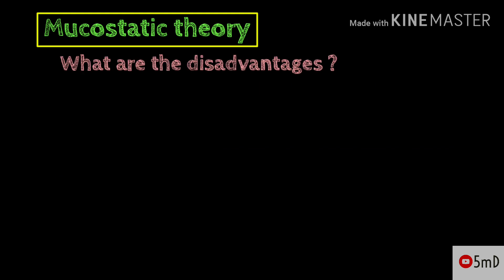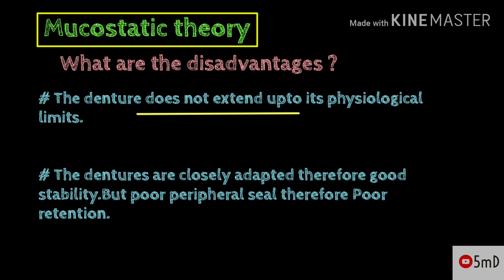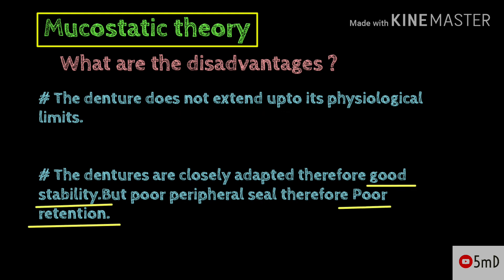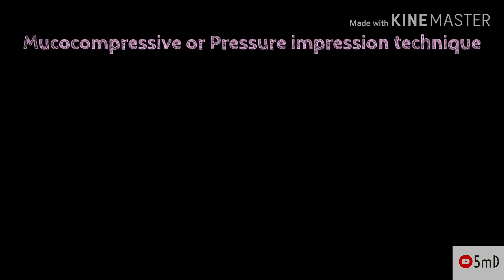The disadvantages of this method: the denture does not extend up to the physiological limits since the flanges are short. The dentures are closely adapted, so good stability is present, but there is poor peripheral seal because border molding is not done, and therefore poor retention.